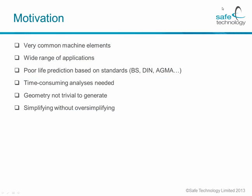So why did we go ahead and decide to develop fast gear fatigue analysis? Gears and gear wheels are very common machine elements that figure in a multitude of applications. There is a big downside if you are trying to predict the life based on a standard — be this British, German, or American — and that is simply that the life prediction isn't really that good. If you then turn to numerical solutions and would like to look in more detail at what goes on, you are going to need a lot of time-consuming analyses.